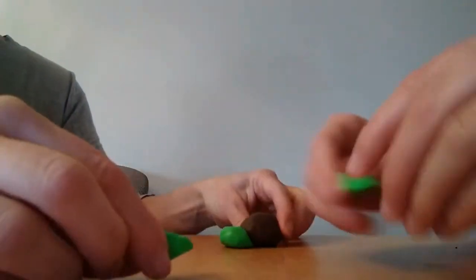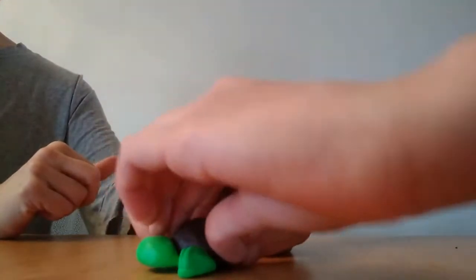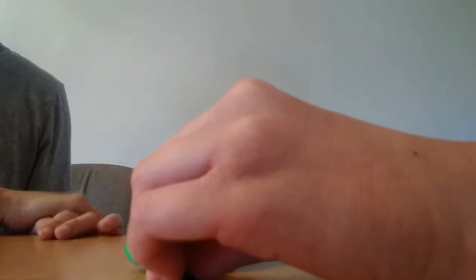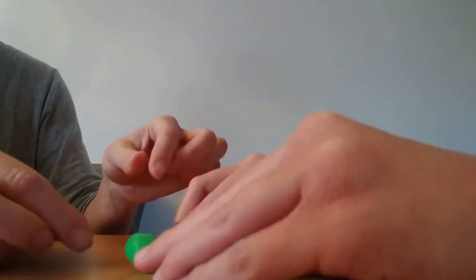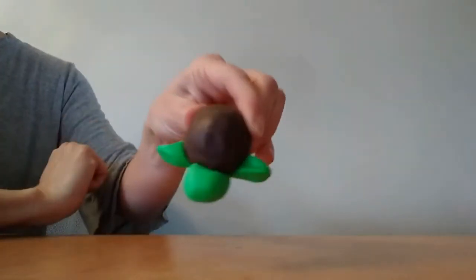Then you're going to place the two legs, front legs, on either side of the turtle. Make sure it's sticky on there.